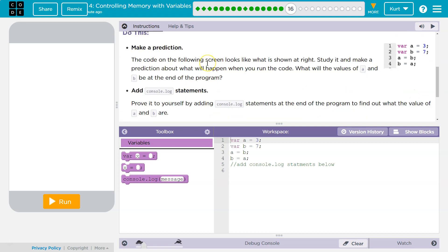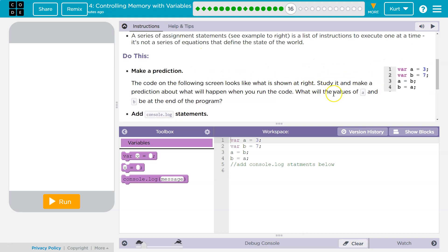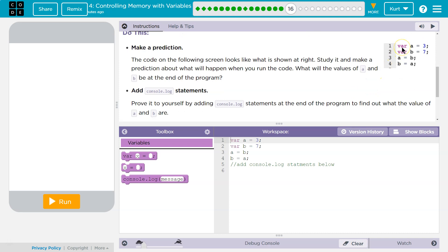Okay, do this. Make a prediction. The code on the following screen looks like what is shown at the right. Study it and make a prediction about what will happen when you run the code. What will the values of a and b be at the end of the program? Ooh, this is tricky. If you're one of my students, I use this as a warm-up question in our class. You are welcome. And it's on the exit ticket.